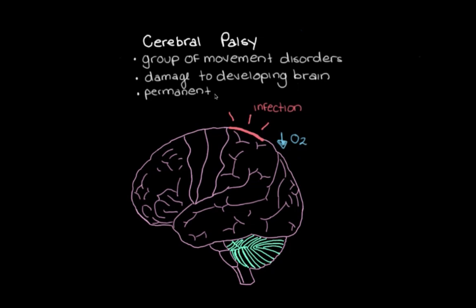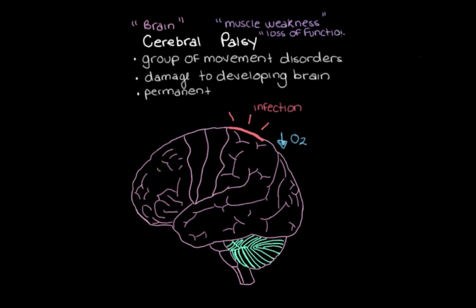Now that we know a little bit more about cerebral palsy, we can make a bit more sense of the name. Cerebral means brain — so this is where the damage is. And palsy means muscle weakness or loss of function, so this is describing the main problem that arises from this damage in the brain.